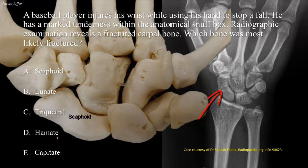Scaphoid fracture often results from a fall on the palm when the hand is abducted. Owing to the poor blood supply of the proximal part of the scaphoid, delayed union may take place. Avascular necrosis of the proximal fragment may also result. Avascular necrosis means death due to insufficient blood supply.